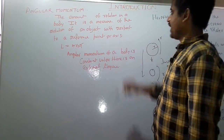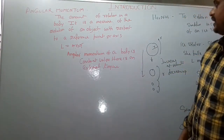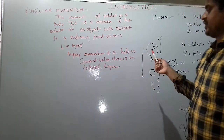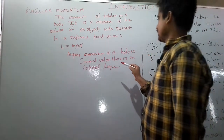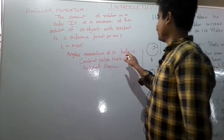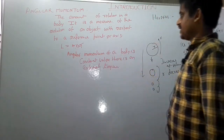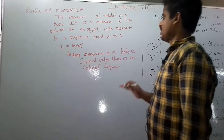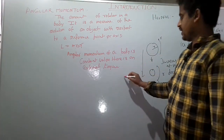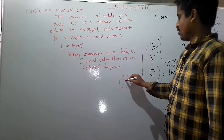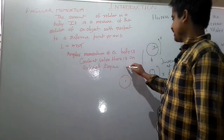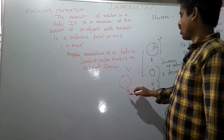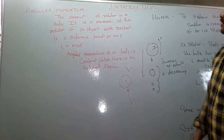Angular momentum is conserved for any physical system unless there is an external torque working on it. So if there is a body rotating around its axis, its angular momentum is conserved as long as no external torque acts on it.